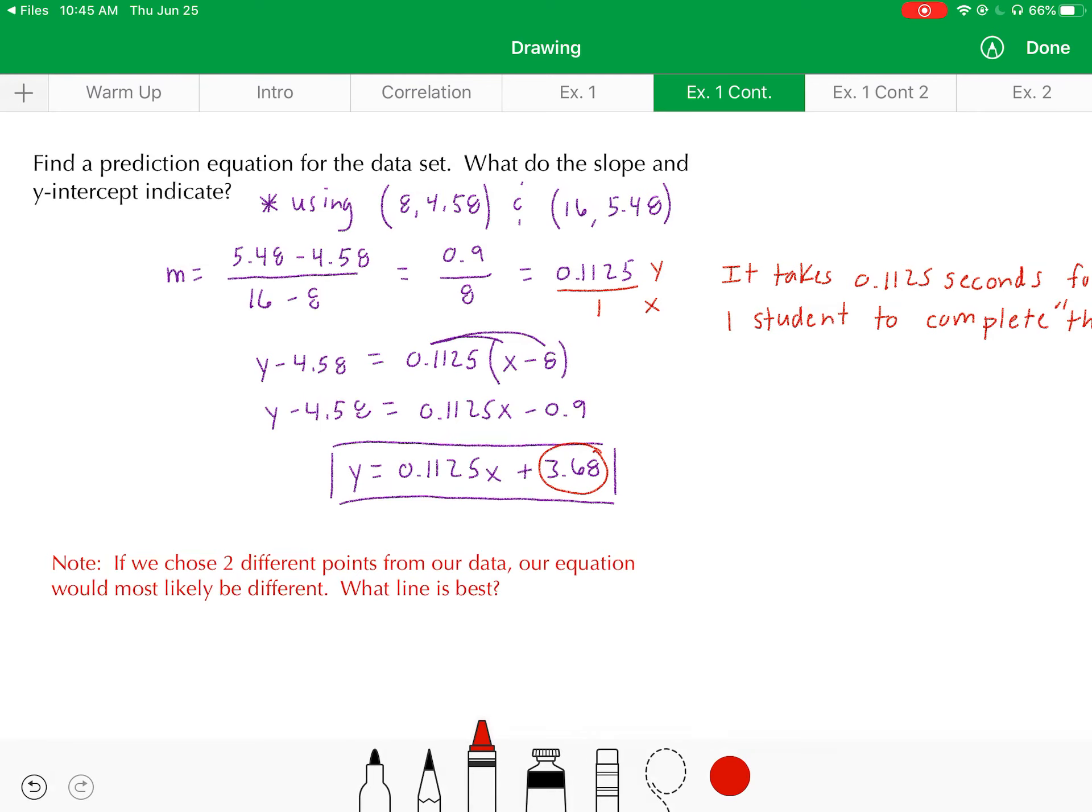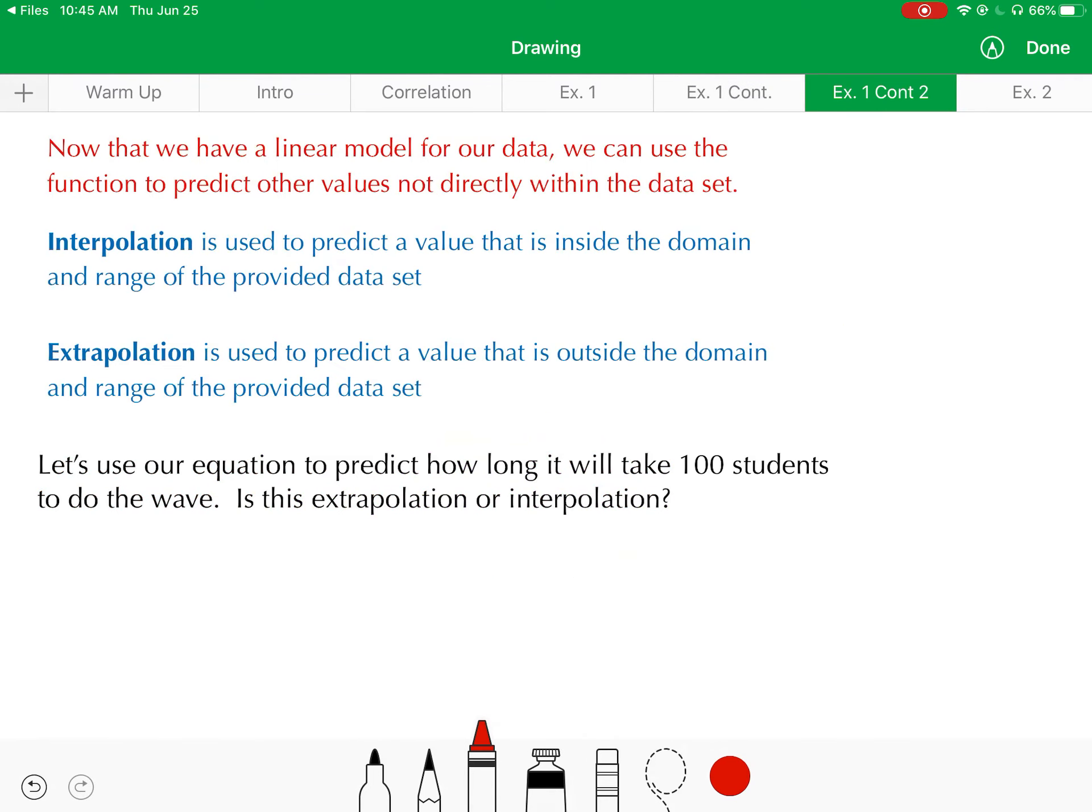Now let's move forward and now that we have this prediction equation, let's use it to predict some values that weren't from the actual data set itself. Whenever you're using your equation to predict values that aren't directly within your data set, you're doing a process called interpolation or extrapolation. Interpolation is used to predict a value that's inside the domain and range of your provided data set. Extrapolation is used to predict a value that is outside the domain and the range of your provided data set.